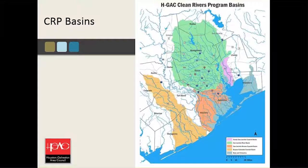The map on the right-hand side shows the HGAC area. We cover 13 counties — Walker County to the north, Colorado, Wharton County, Matagorda to the west, and Liberty and Chambers to the east. It's a very large area geographically. We're the only COG in Texas that is part of the Clean Rivers program, and we're a lead partner agency managing the ambient water quality monitoring within one river basin — the San Jacinto basin — three coastal basins, and the basin estuaries that drain into Galveston Bay.